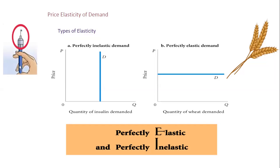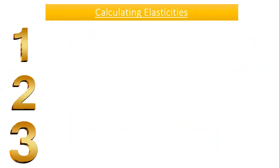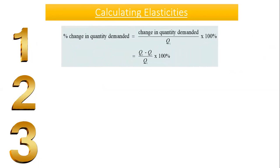A good way to remember the difference between the two perfect elasticities: perfectly elastic is horizontal — you can see it from the E — and perfectly inelastic is vertical — you can see it from the I. Now, to calculate elasticities, there are three steps.